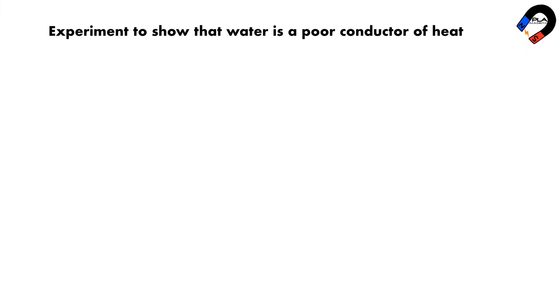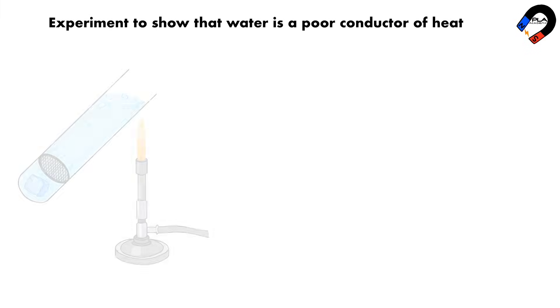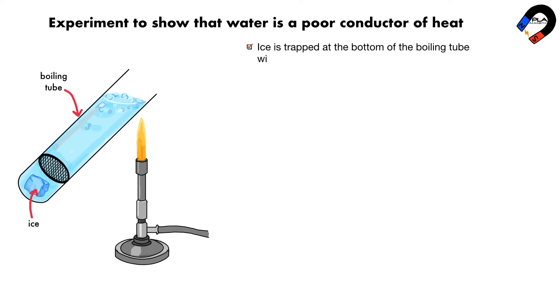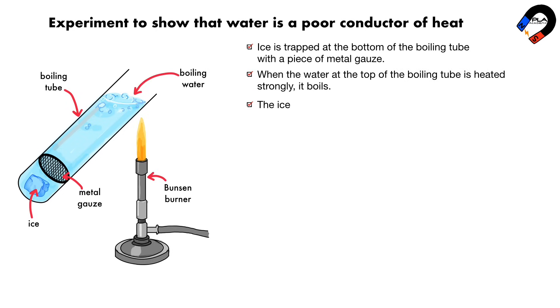An experiment to show that water is a poor conductor of heat. Set up the apparatus as shown in the diagram. Ice is trapped at the bottom of the boiling tube with a piece of metal gauze. When the water at the top of the boiling tube is heated strongly, it boils. The ice at the bottom of the tube does not melt. This shows that water is a poor conductor of heat.